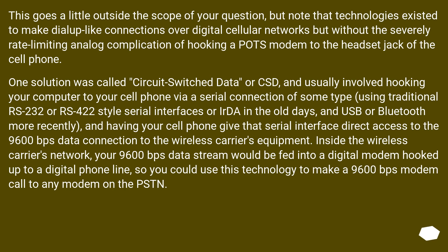This goes a little outside the scope of your question, but note that technologies existed to make dial-up-like connections over digital cellular networks without the severely rate-limiting analog complication of hooking a POTS modem to the headset jack of the cell phone. One solution was called circuit-switched data, or CSD, and usually involved hooking your computer to your cell phone via a serial connection — RS-232, RS-422, IrDA in the old days, and USB or Bluetooth more recently — giving that serial interface direct access to the 9,600 bps data connection to the wireless carrier's equipment. Inside the wireless carrier's network, your 9,600 bps data stream would be fed into a digital modem hooked up to a digital phone line, so you could use this to make a 9,600 bps modem call to any modem on the PSTN.